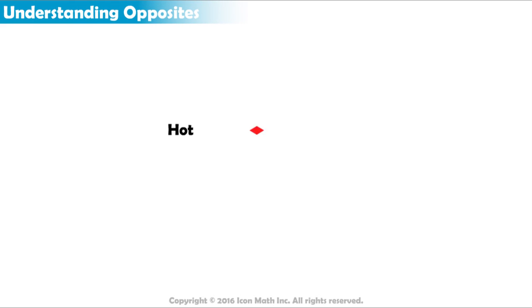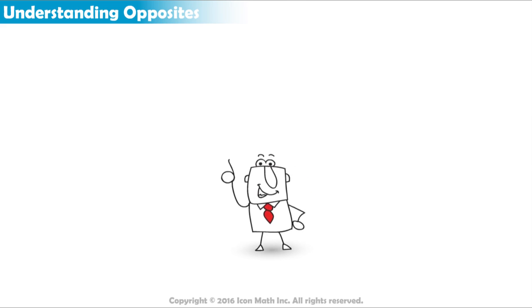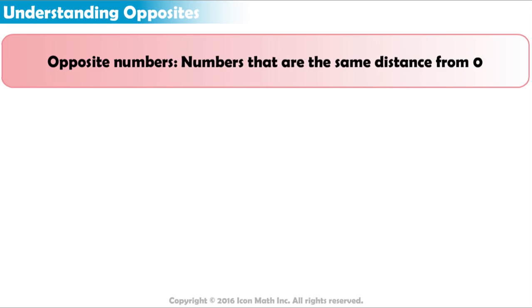You know that the opposite of hot is cold and the opposite of up is down, but did you know that numbers have opposites as well? The opposite of a number is the other number that is the same distance away from zero on the opposite side of the number line.